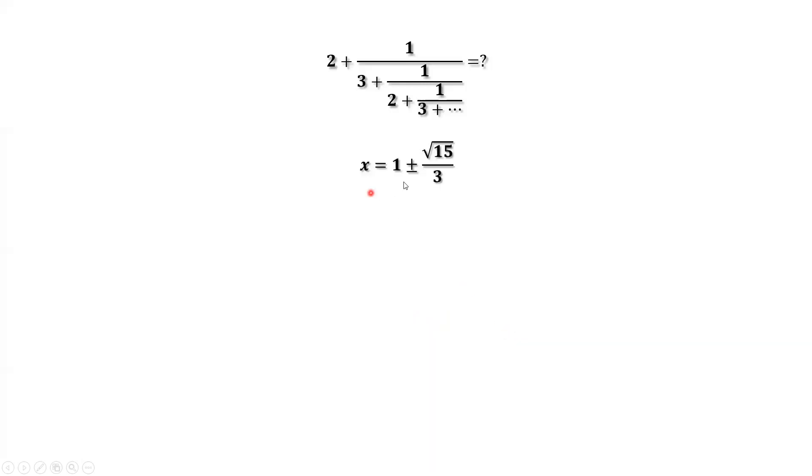Here, we have two answers for x. As we defined, x is this continued fraction. Certainly, we can see that x is bigger than 0. This implies x equals 1 plus square root of 15. We drop the negative solution. Therefore, this continued fraction equals 1 plus square root of 15.